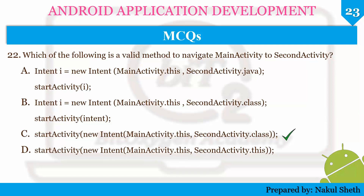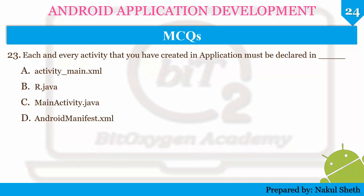The correct answer is option C: startActivity(new Intent(MainActivity.this, SecondActivity.class)), because the other options will generate a compile-time error. So the correct syntax to navigate from one activity to another is displayed in option C only.